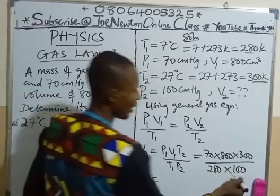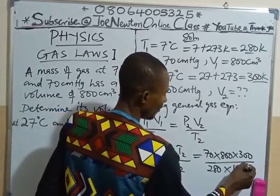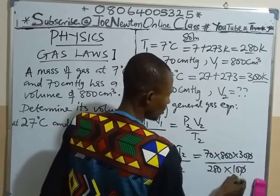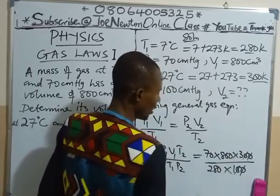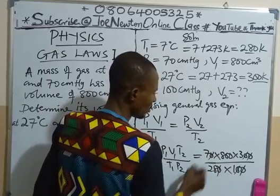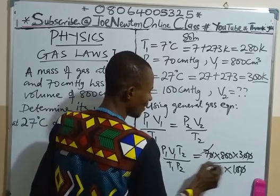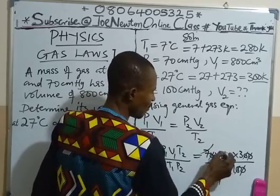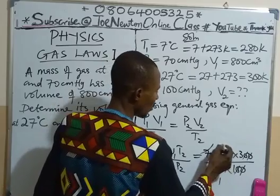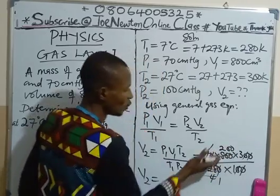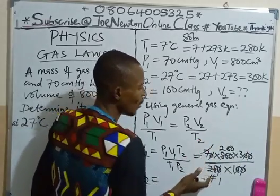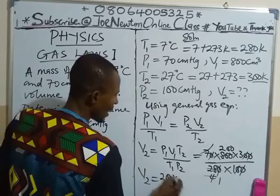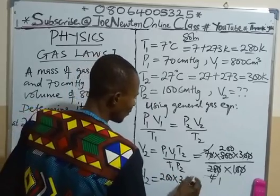Simplifying, we cancel the zeros: canceling zeros from 300, 280, and 100, we are left with 3, 28, and 1. Then 7 cancels into 28, giving 4. Then 4 cancels into 800, giving 200. So we are left with 200 times 3 in the numerator and 1 in the denominator, which gives us 600.